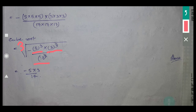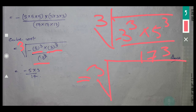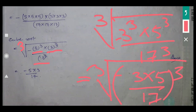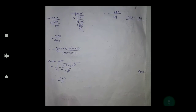Since cube root is given, we have cube root of 3 cubed times 5 cubed divided by 17 cubed. We can write this as 3 times 5 divided by 17, all to the power of 3, under the cube root. The cube and cube root cancel, so the answer will be 15 divided by 17.